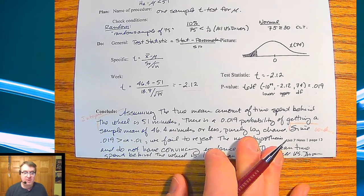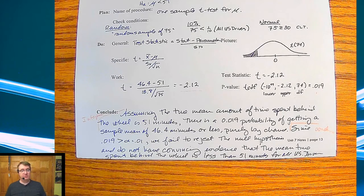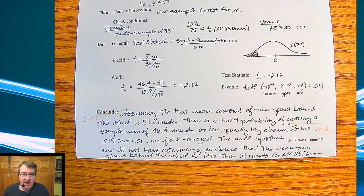Assuming that the mean amount of time spent behind the wheel is 51 minutes, there is a 0.0109 probability of getting a sample means of 46.4 minutes or less, purely by chance. Since that value, 0.019 is greater than our alpha value of 0.01, we fail to reject the null hypothesis and do not have convincing evidence that the time spent behind the wheel for U.S. drivers is less than 51 minutes.